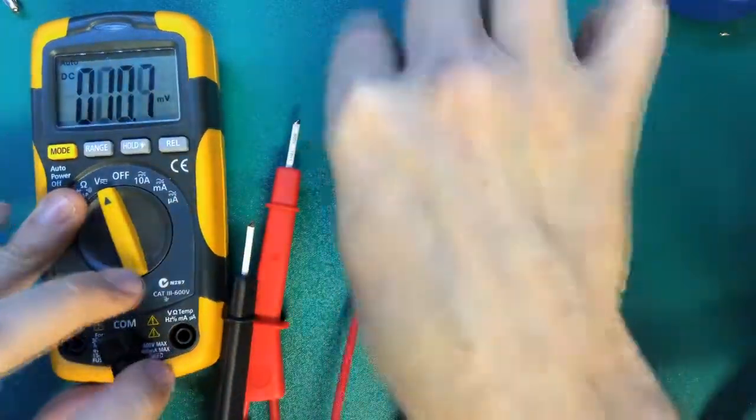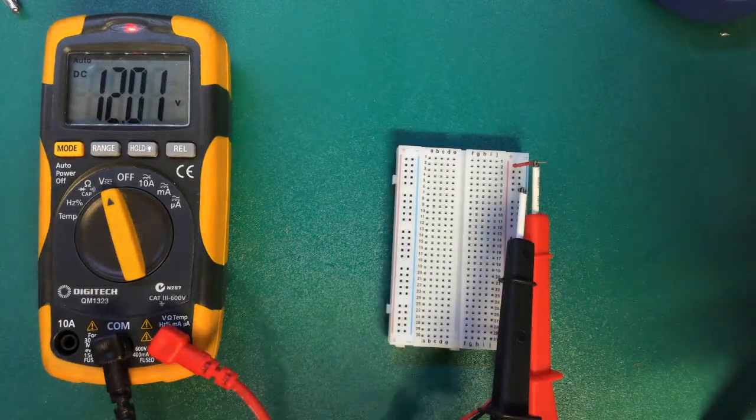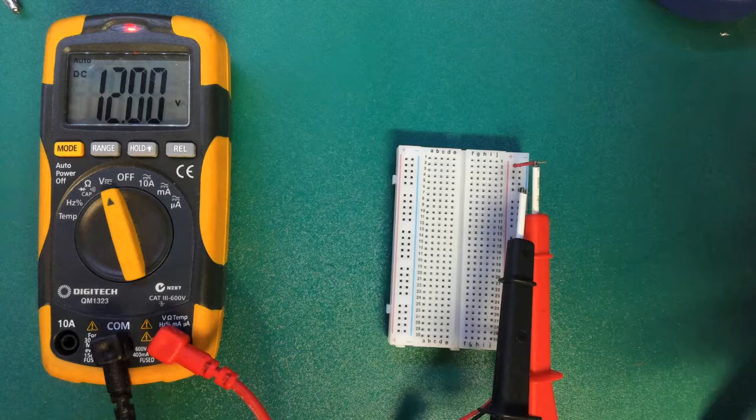Same as before. Plug your probes into the appropriate hole. Hook one. Hook the other. Voila! Measuring the voltage on our power rail. And that's it.